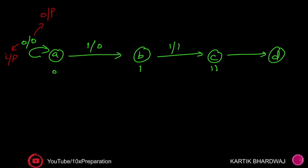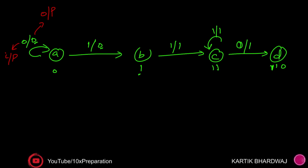If zero is coming at state C, we check the pattern. If one is coming at state C, it is going to be written back to state C itself — because all three samples have come and it gets the overlapping '111'. We can overlap for the last two samples only. So if one is coming again at C, it stays at C with output one. If zero is coming, it will move to state D.